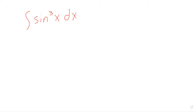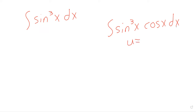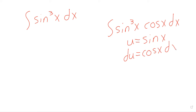Last Thursday, we were looking at things like the sine cubed of x times the cosine of x, and we were able to approach those using u-substitution. We'd let u be the sine of x, so du would be the cosine of x dx.